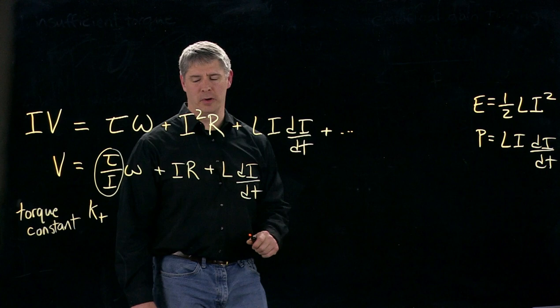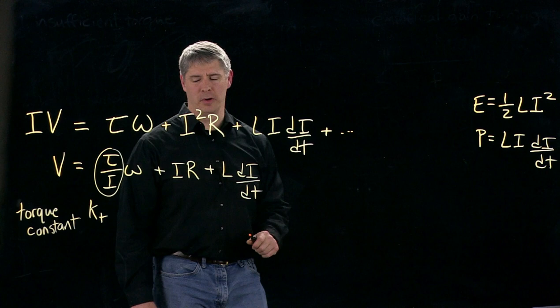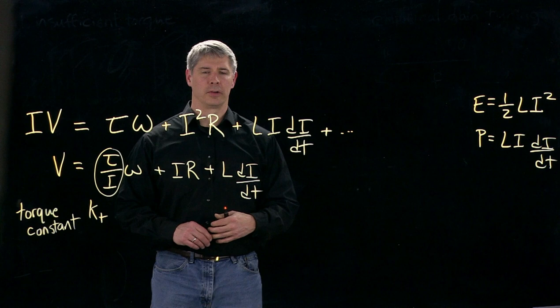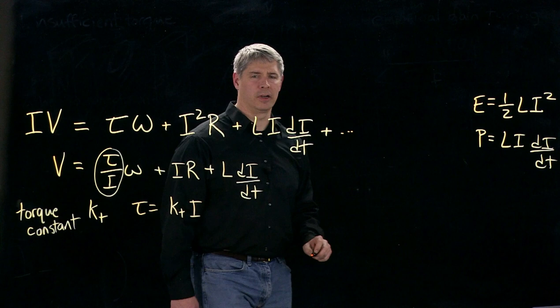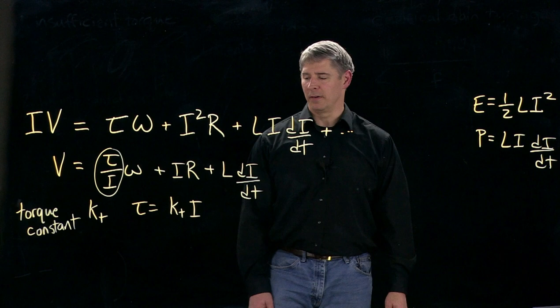And this is one of the most important properties of any motor. The torque constant is what relates the current going through the motor to the torque that it produces. And we can also write the torque out of the motor is equal to the torque constant times the current. Okay, so this K sub T is a fundamental characteristic of any motor.